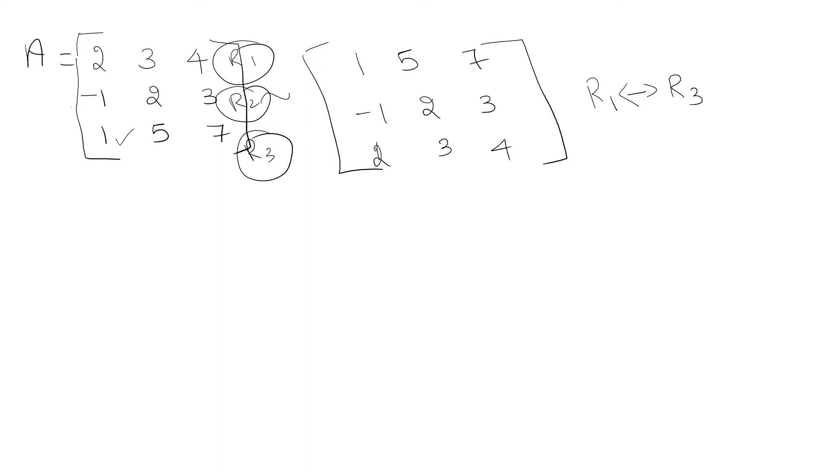Now try to make the first non-zero element over here as 0. If I have to make this as 0, just check the previous element: -1 plus 1. If I add these two rows, this will become 0. I am going to do the operation R_2 → R_2 + R_1.